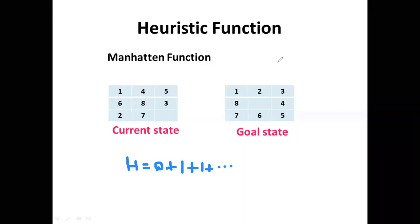For each misplaced tile we add a value of one, and if the tile is in the exact position we add zero. So for tile four, it is needed in one place but is in a different place, so it is also misplaced. Tile five is similarly evaluated. For the empty tile, you have to decide consistently — either always include it in the calculation or always exclude it, and follow that rule for the entire search tree construction.